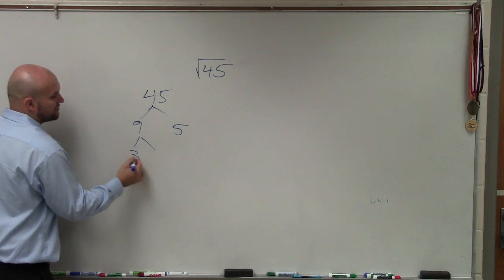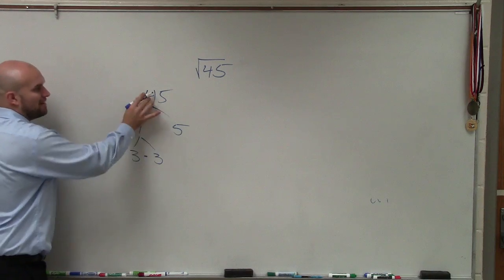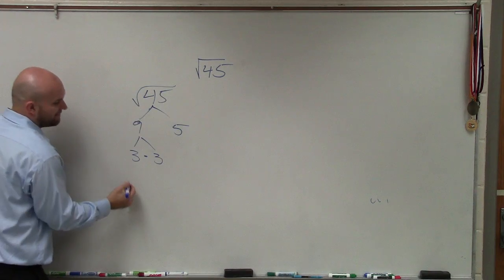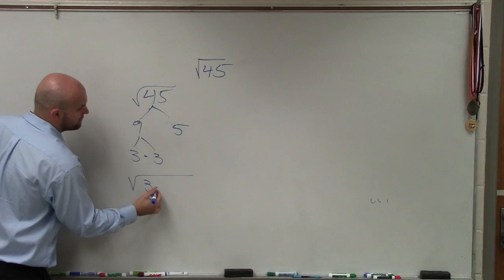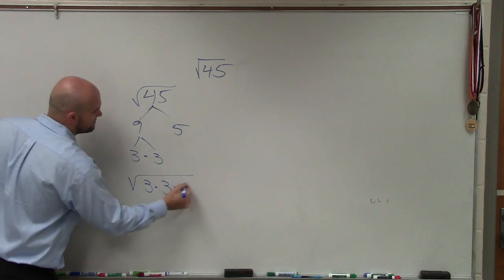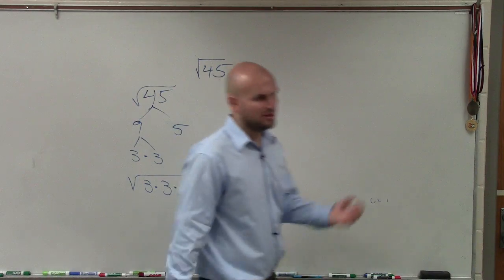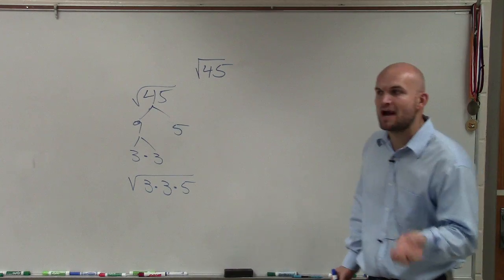Then I can break 9 into 3 times 3. So basically, the square root of 45 is the same thing as the square root of 3 times 3 times 5. 3 times 3 times 5 is the prime factorization.